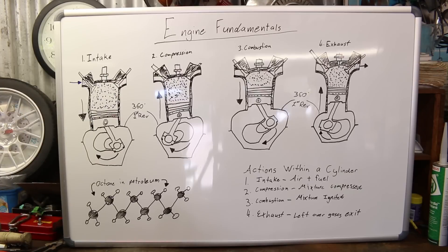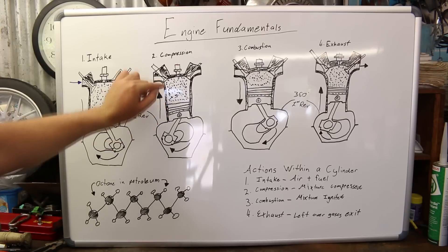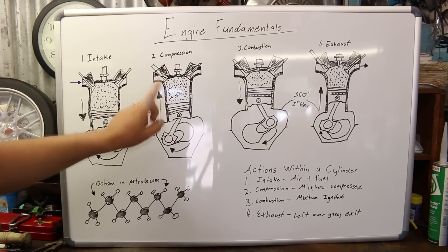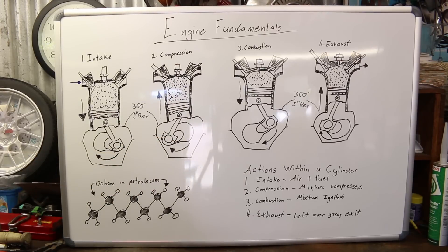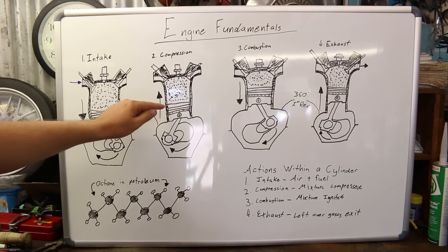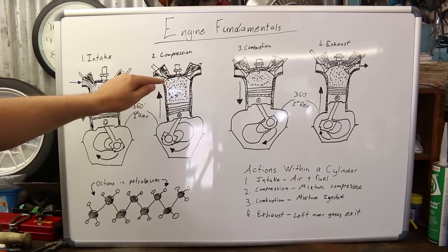Moving on to the compression stroke. The compression stroke is when the piston compresses the air and fuel by forcing them into a smaller area, which also helps mix the different molecules and atoms of the fuel and air together. The compression stroke begins when the piston is roughly one-third of its way going back up. Keep in mind we haven't yet achieved one complete 360-degree revolution — the intake stroke starts when the piston is at the top, goes down, and then the compression stroke starts when it's one-third of the way back up.